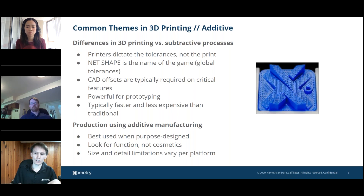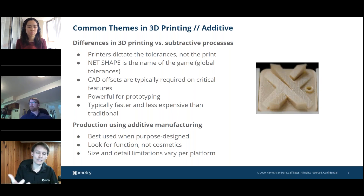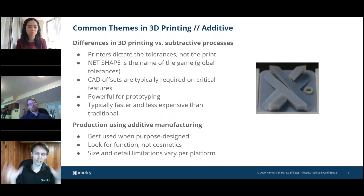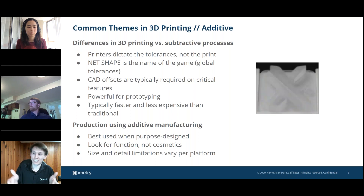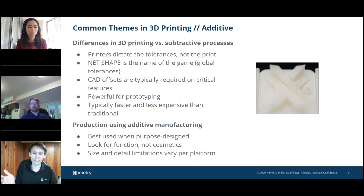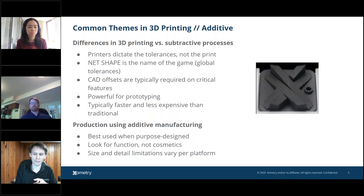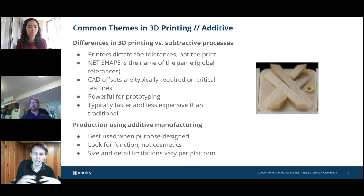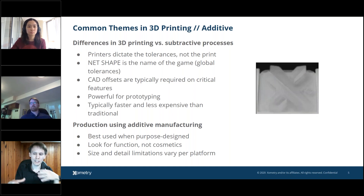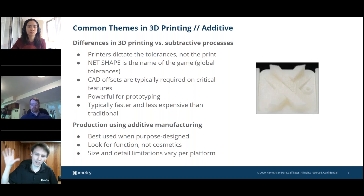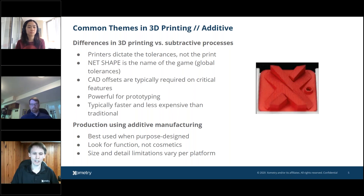Even within Xometry's seven additive manufacturing technologies, they're all considered 3D printers with varying platform sizes. Some platforms are up to six inches, some are 36 inches, and there are large area platforms that can go much larger. Depending on the technology chosen, you may have different platform size limitations — something to be mindful of, and we have wonderful guides on that. This applies to literally everything we're talking about today.